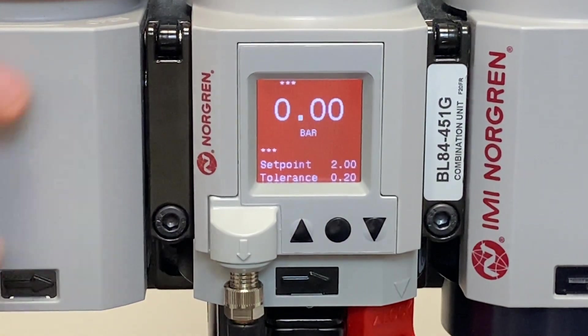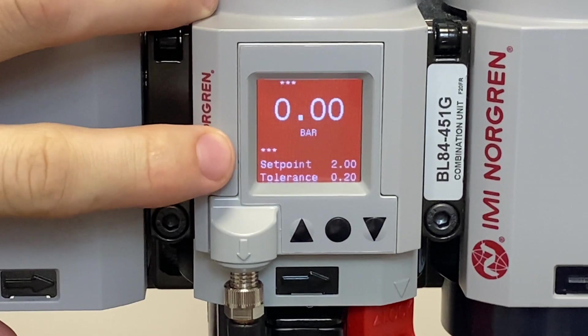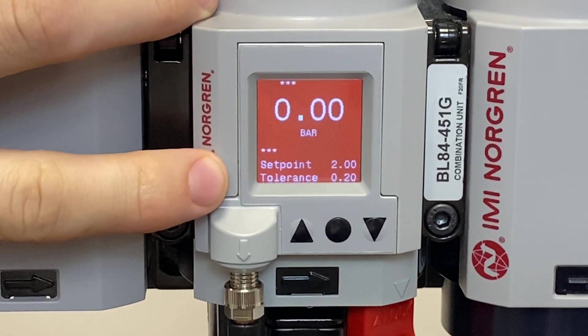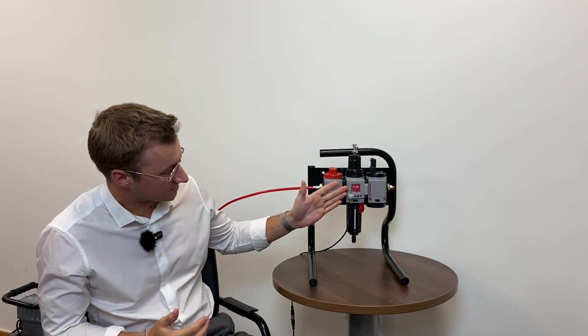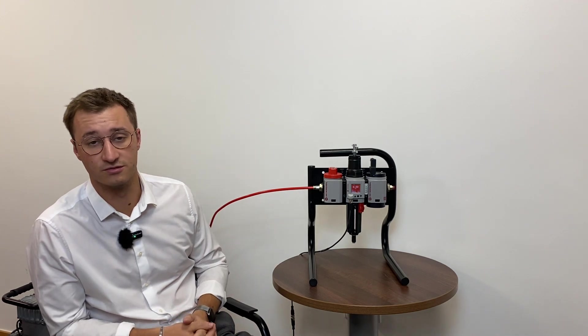Then we can just secure it with the thread there. As you can see, we've got a display come up there, so this display is going to show us primarily the pressure we've got running through the system.